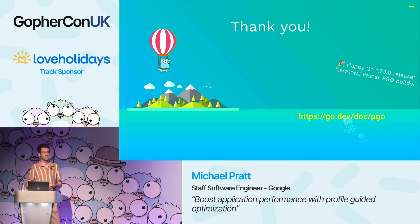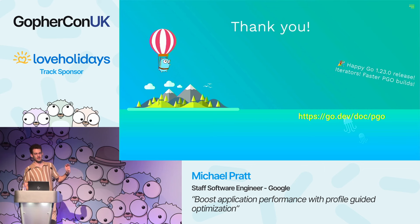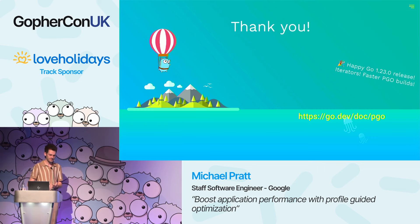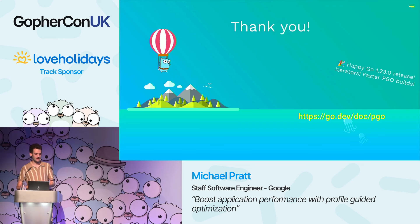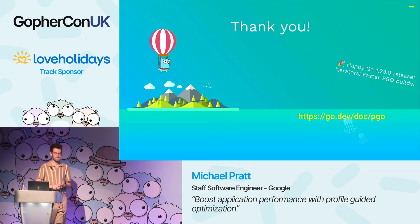Q: PGO isn't a new concept — any lessons learned from other reference implementations? A: A couple of the biggest takeaways were source stability and iterative stability — these are important to make PGO easy to use, which was one of our big goals. In other languages PGO can have a bad reputation for being very difficult and fiddly. There's also a paper from a Google team called AutoFDO from several years ago covering similar PGO approaches in C++, which has been super helpful.